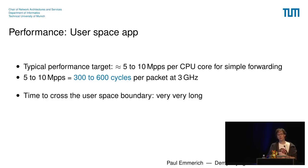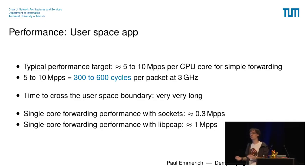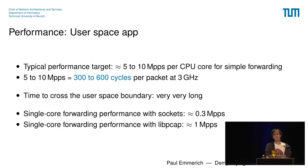How long does it take to cross the user space boundary? Very, very long for an individual packet. With single-core packet forwarding using a raw socket, you can maybe achieve 300,000 packets per second. With libpcap, you can achieve a million packets per second. These figures can be tuned — you might get a factor of two out of that — but multi-core scaling is unnecessarily hard. So this doesn't really seem to work.